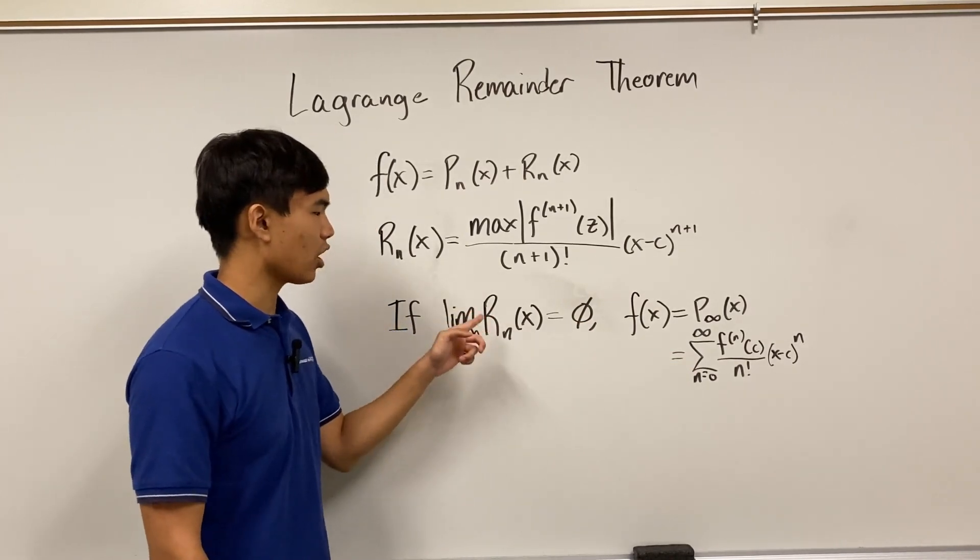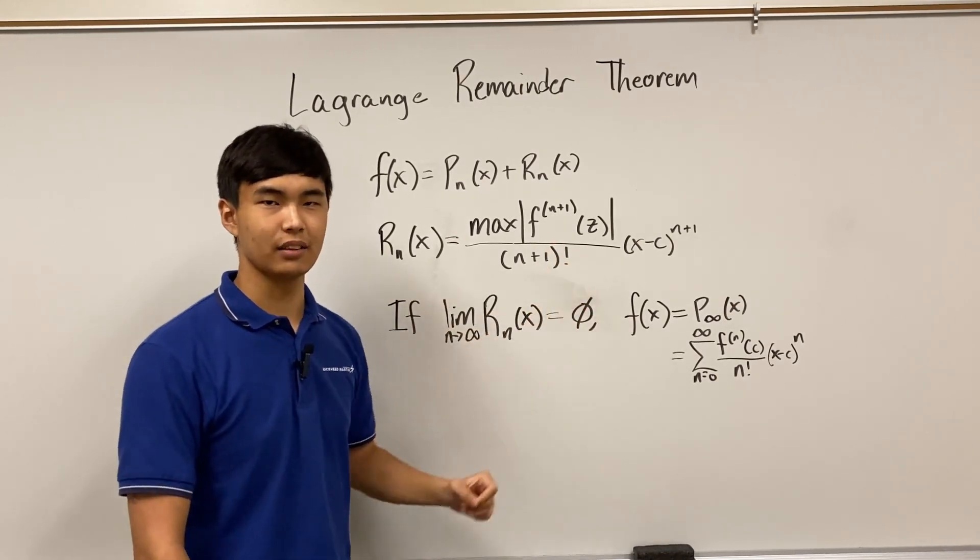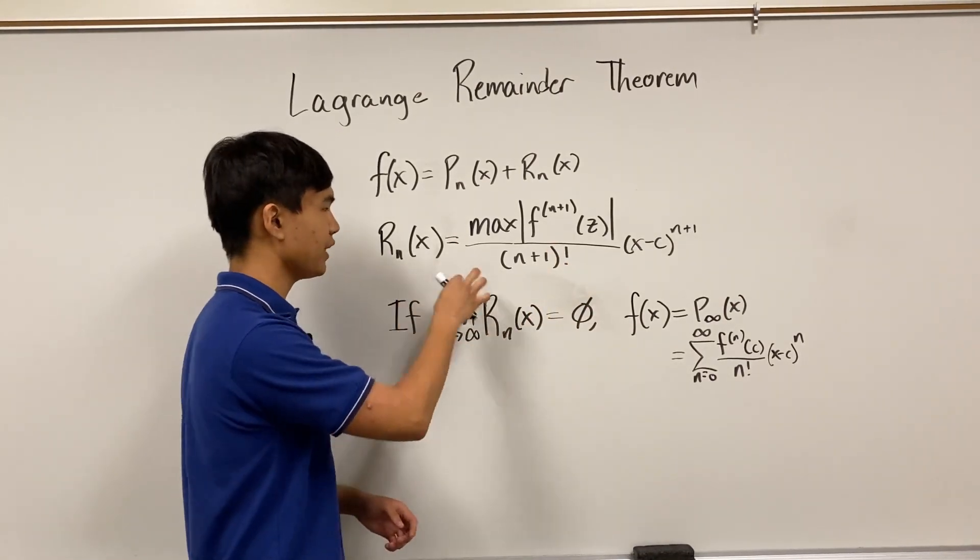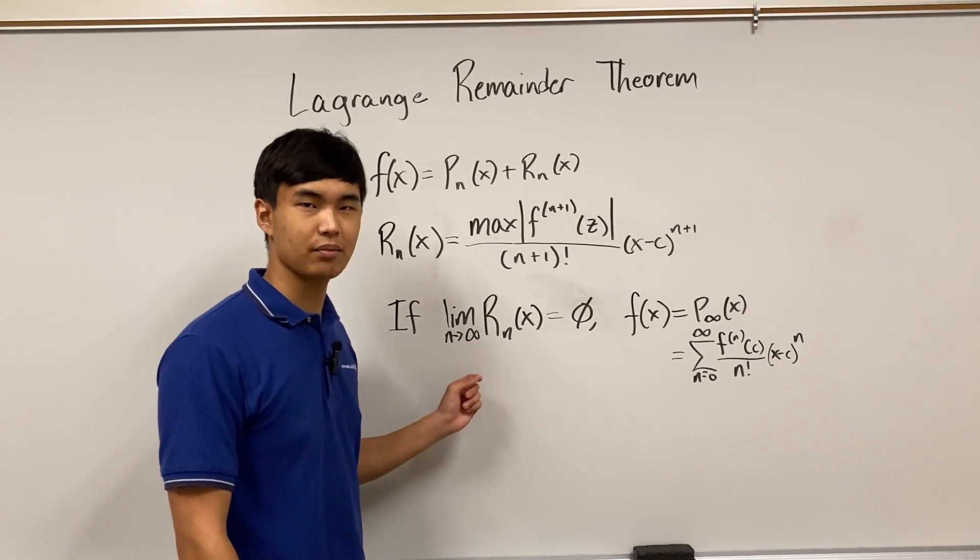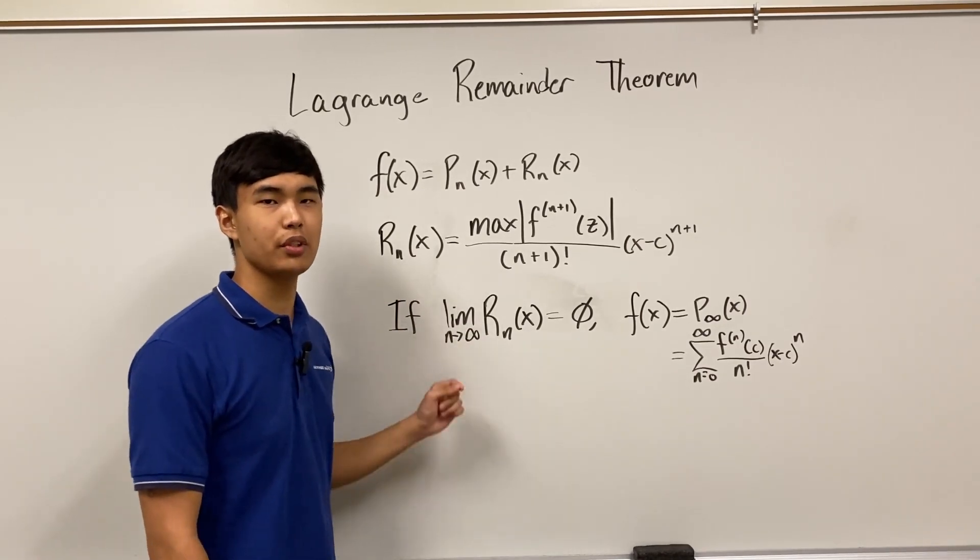I also note that while this is R_n of x, remember that whenever we use this, x is a constant. So in reality, the only thing we could change about this remainder is the number term it is. And another way this could be read is as we add more terms, the error in the polynomial goes to zero.